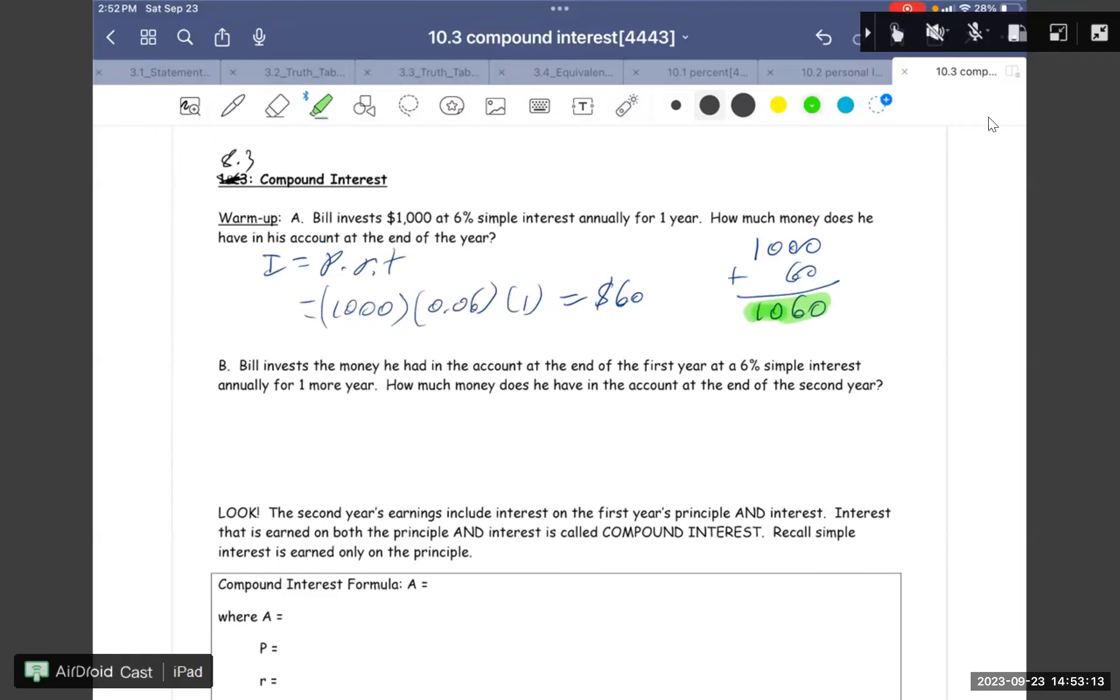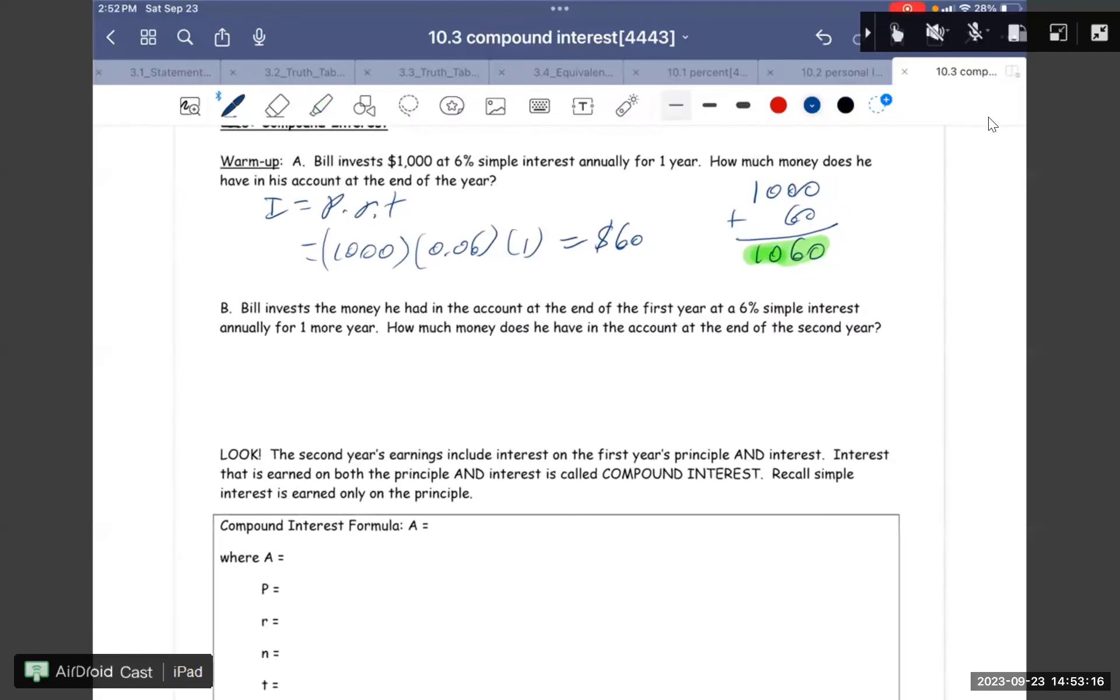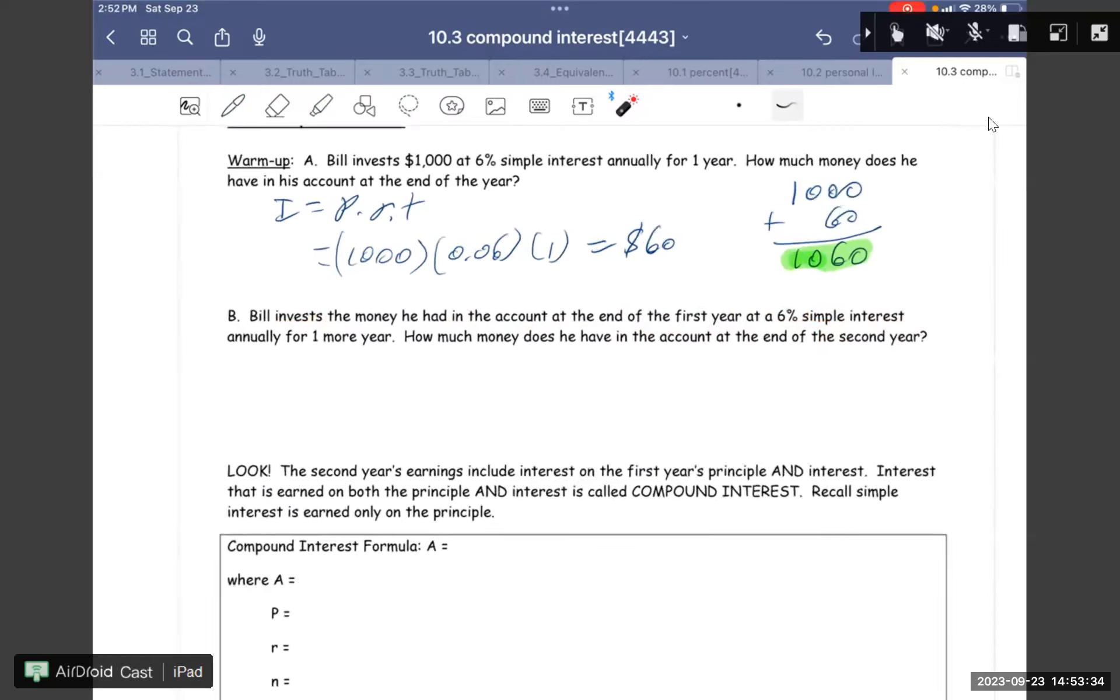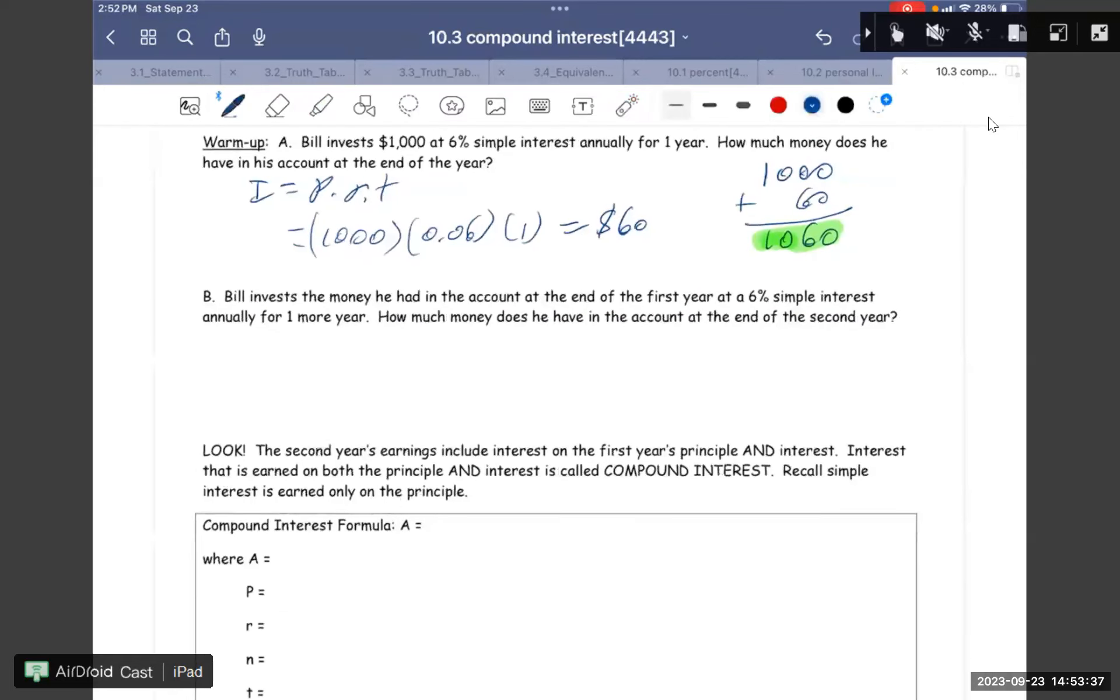Bill invests the money he had in his account at the end of the first year at 6% simple interest annually for one year. How much does he have in the account at the end of the second year? So we have I equals PRT, right? So now for the second year, the amount of money is $1,060.